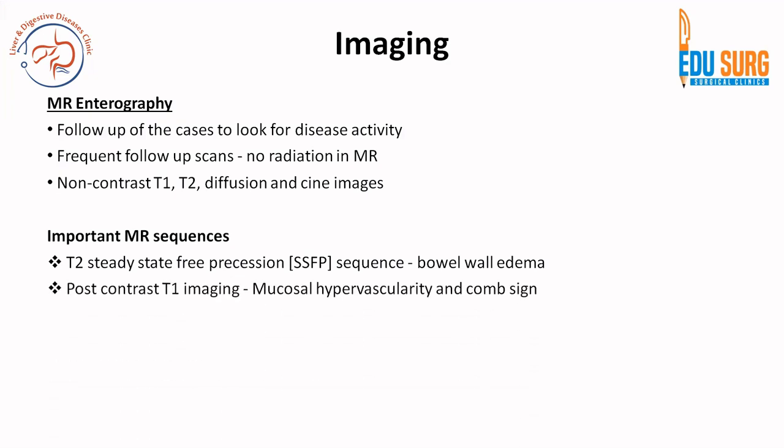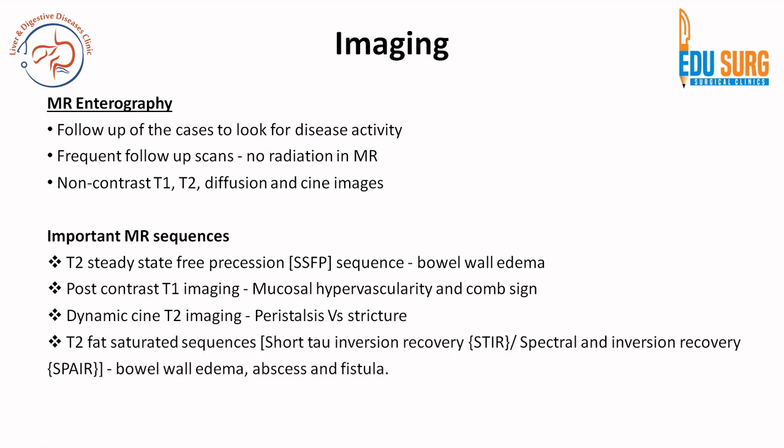T1 imaging is for mucosal hypervascularity and comb sign — remember that contrast in MR is T1. In T2, water is the contrast, so water-containing fluids like bile and spinal fluid appear white. T2 imaging is used for edema. STIR (short tau inversion recovery) and SPAIR (spectral attenuated inversion recovery) are T2 fat-saturated sequences used for bowel wall edema, abscess, and fistula. Dynamic T2 imaging allows differentiation of peristalsis from stricture — if the narrowing opens up it was peristalsis; if it remains, it is a stricture.